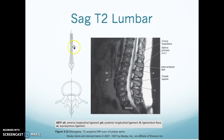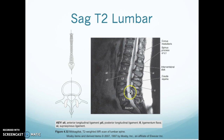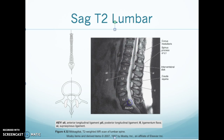Here is a sagittal T2 lumbar. When we count we go 5, 4, 3, 2, 1, then T12, T11. You can see here is your conus medullaris — where the actual spinal cord ends — and then it goes into your cauda equina below. The cauda equina translates to horse's hair; it just free-floats within the CSF. You have your annulus fibers and your nucleus, and we're looking at the anterior longitudinal ligament. There's a ligament running anterior and a ligament running posterior to the vertebral body.